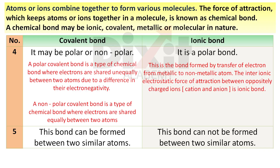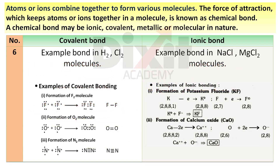Point number 5. Covalent bond can be formed between two similar atoms; ionic bond cannot be formed between two similar atoms. Point number 6. Bonding in H2 and Cl2 molecules is covalent. Bonding in NaCl and MgCl2 molecules is ionic.